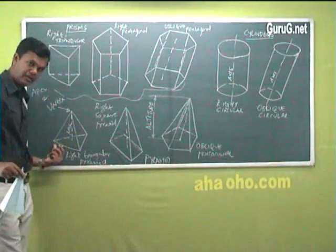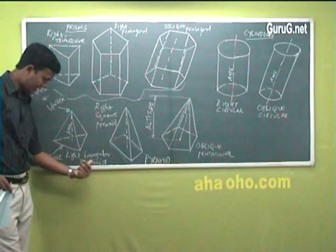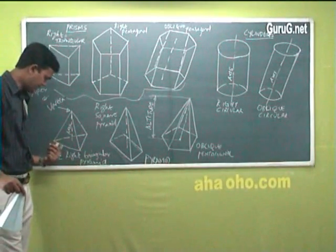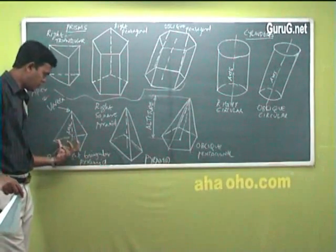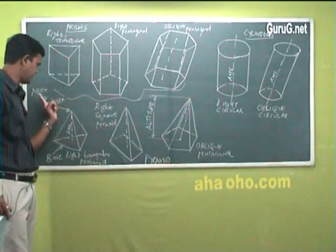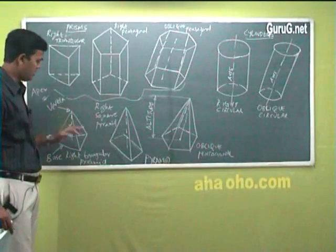The base may be anything. Here I have written, it is the right triangular pyramid. It is a triangle in the base, but the joining top point is a single point. It is called vertex or apex. So this is called a pyramid.